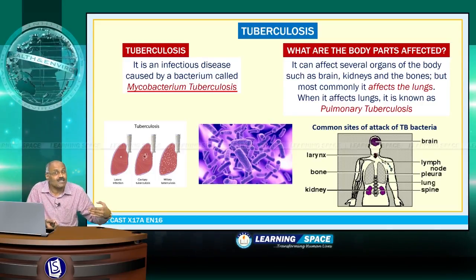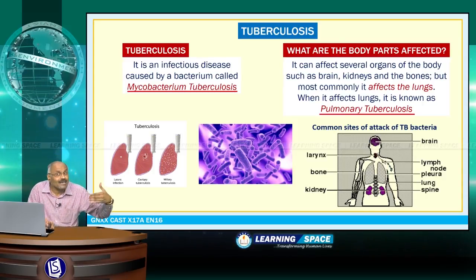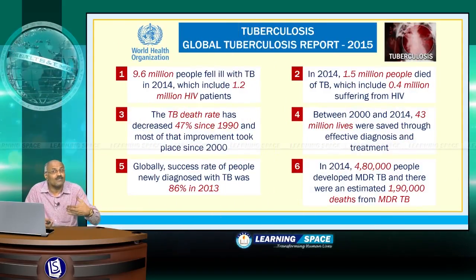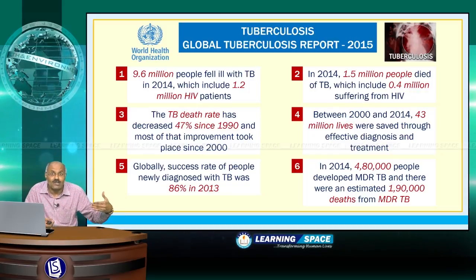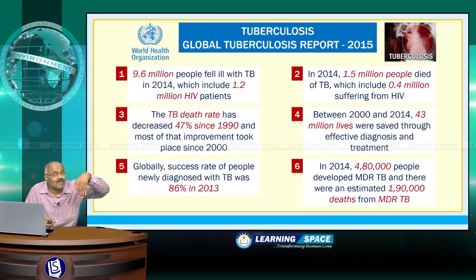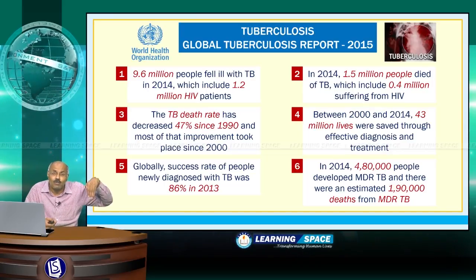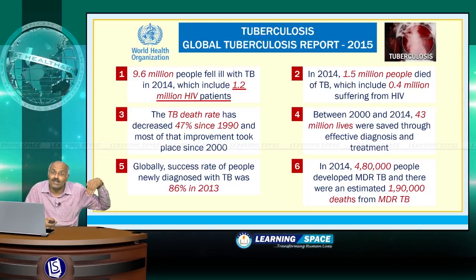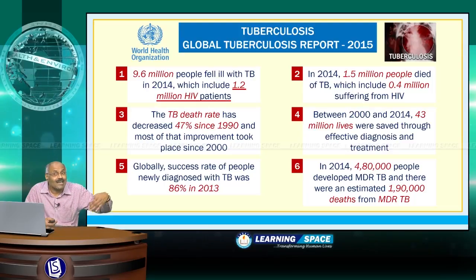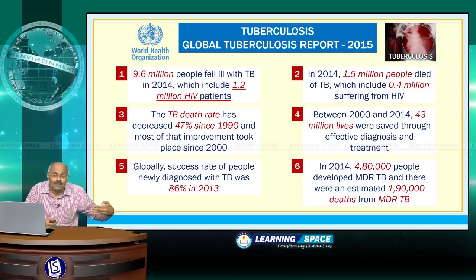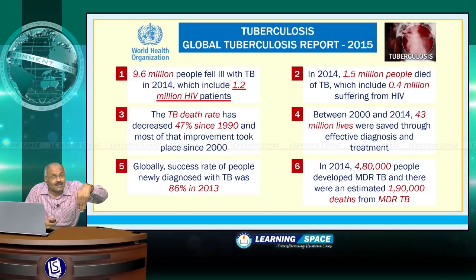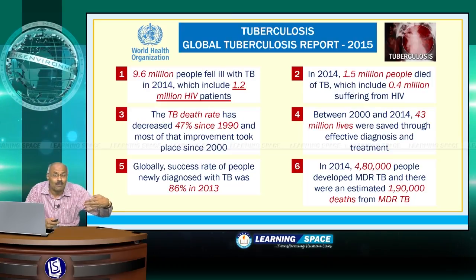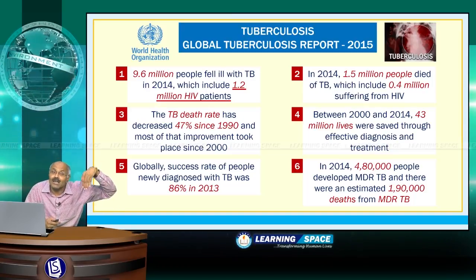When it affects the lungs, the specific name is pulmonary tuberculosis. If you look at the Global Tuberculosis Report 2015 released by the World Health Organization, 9.6 million people fell ill with tuberculosis in 2014, out of which 1.2 million were HIV patients, because their immune system is compromised and their body cannot resist infections.